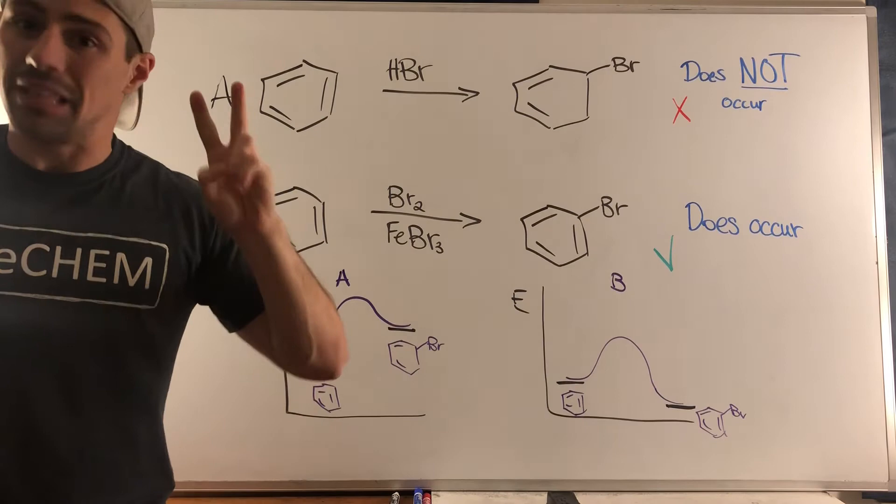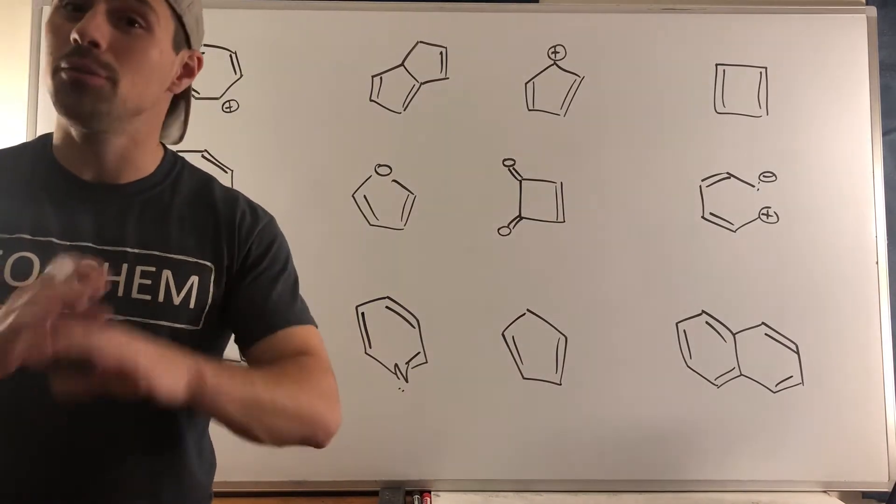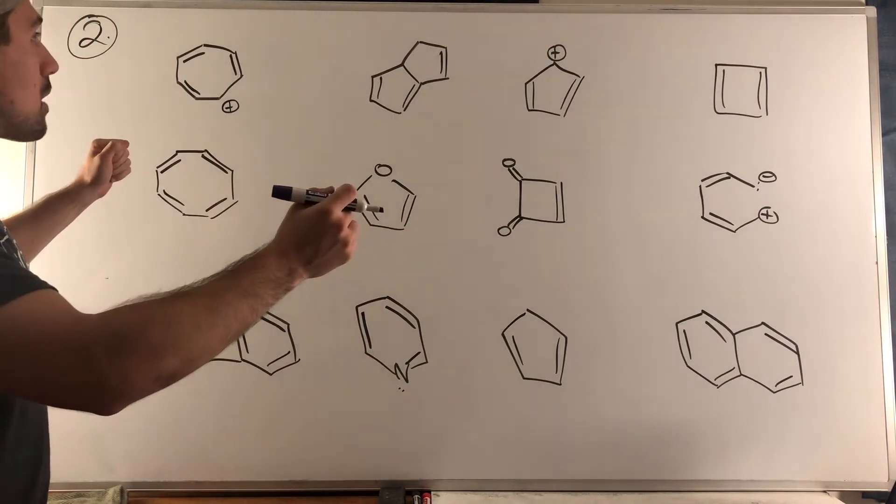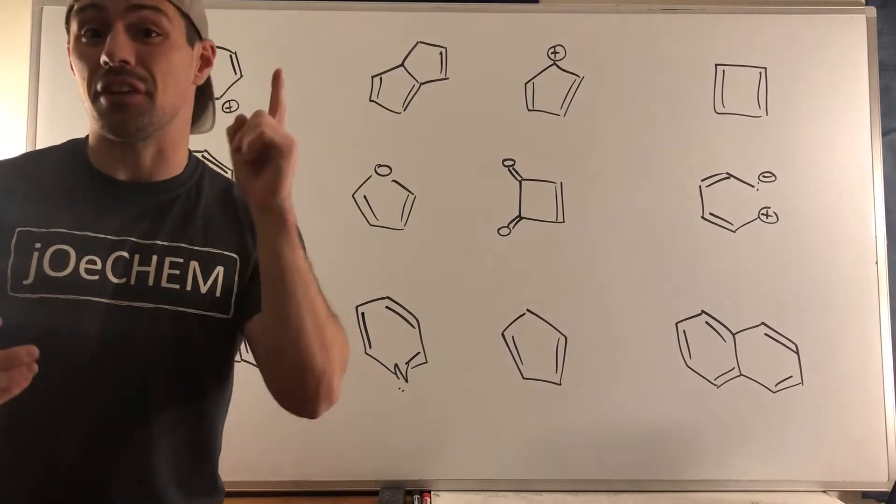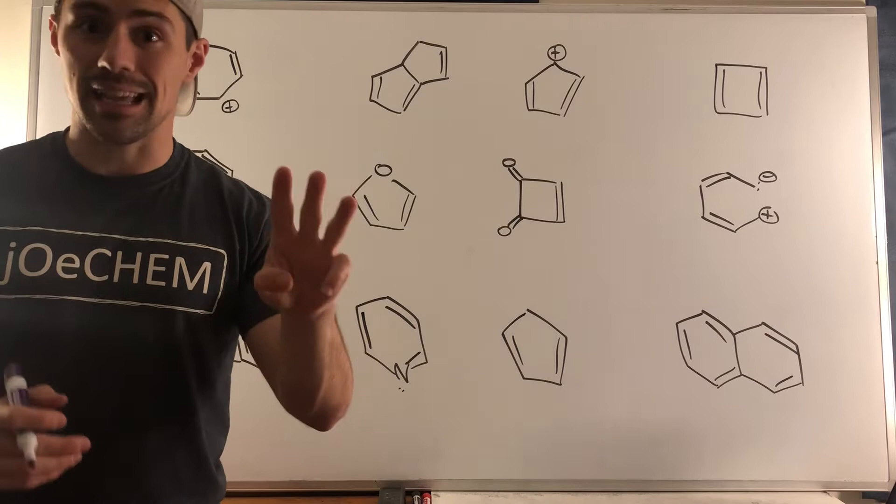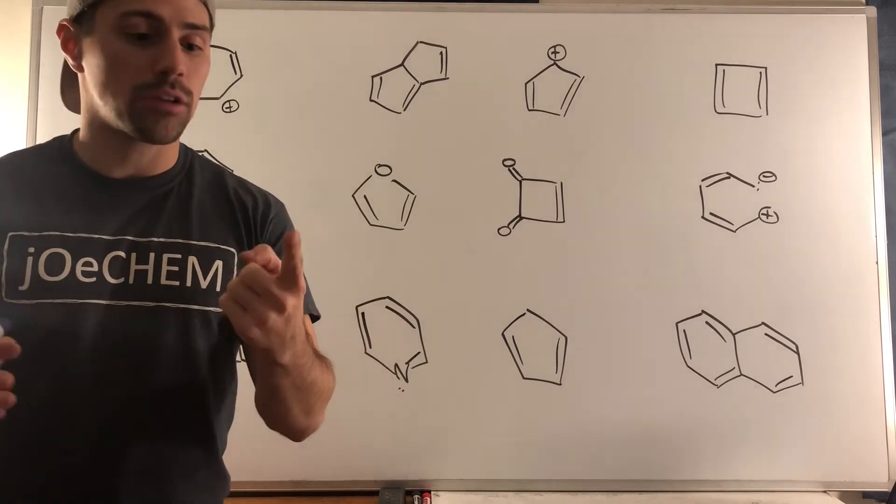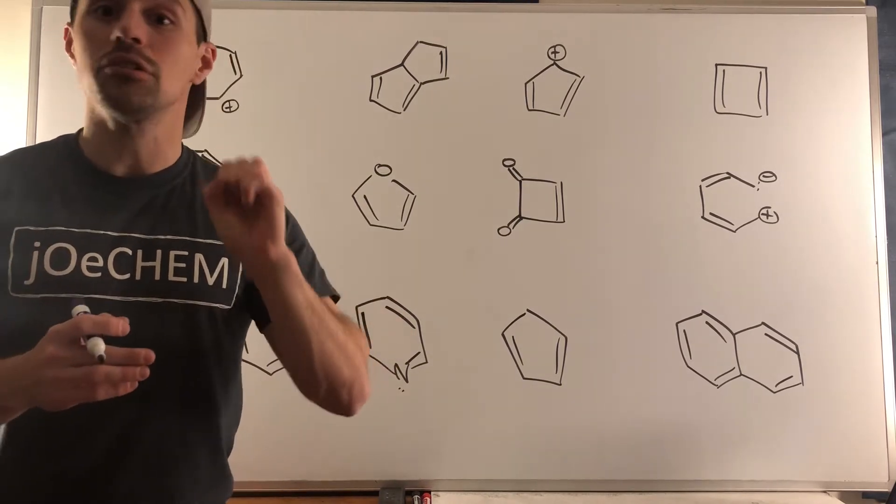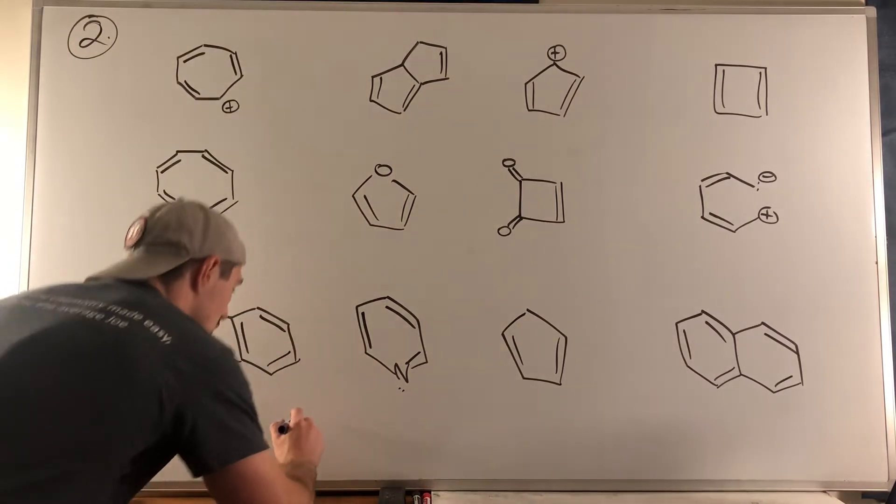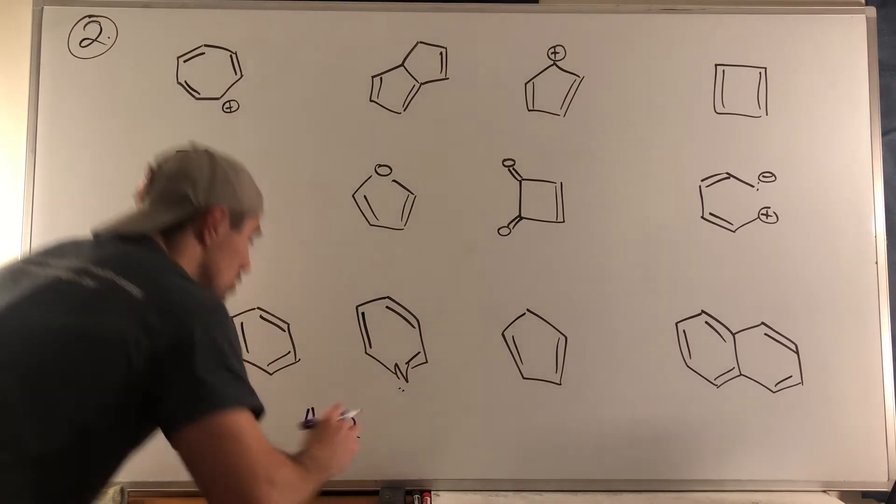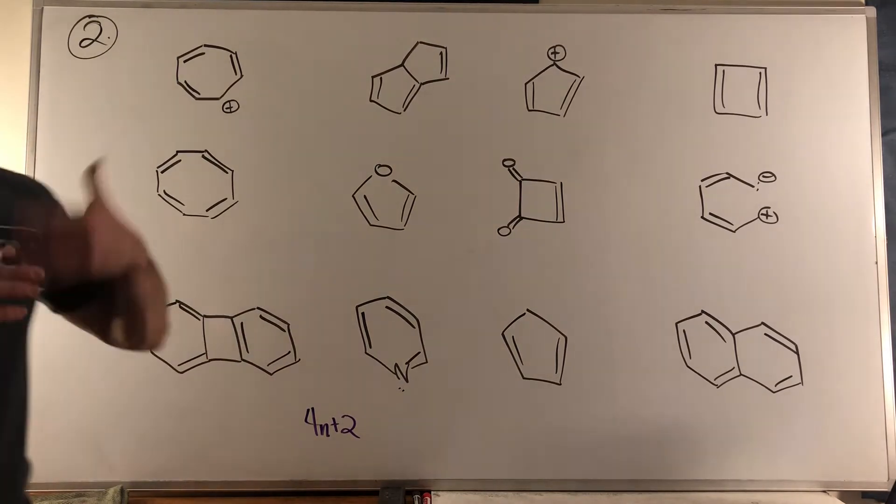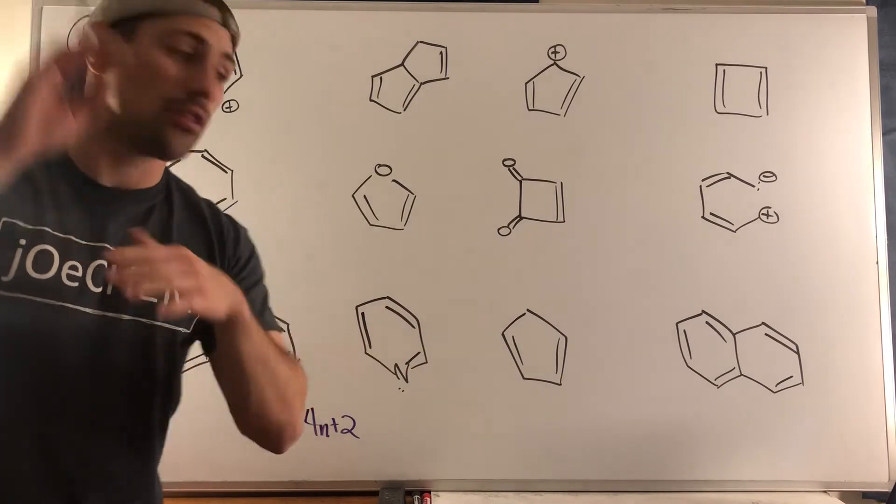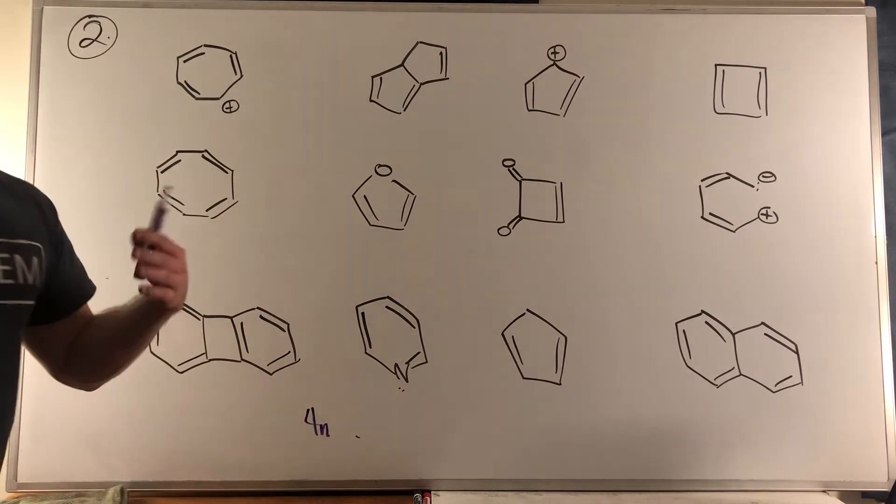Let's rip problem two and finish out this walkthrough. We have 12 structures that we need to identify as either aromatic, non-aromatic, or anti-aromatic. Remember for aromaticity we are looking for a ring that's conjugated, we are looking for it to be flat, and we are looking for Huckel's rule—4n plus 2 pi electrons to be satisfied. If you fail one of those things then you're not aromatic, or if you satisfy all those but you have 4n electrons then you are anti-aromatic.